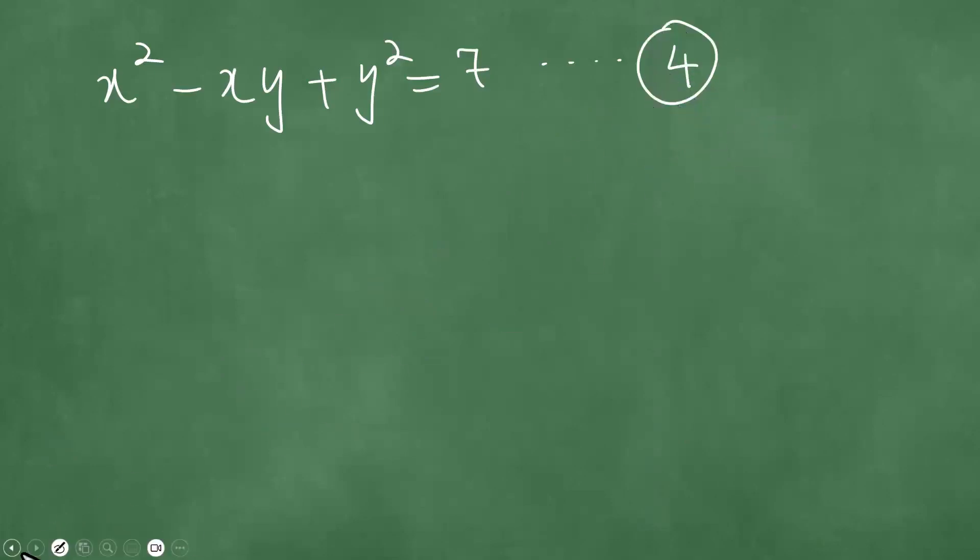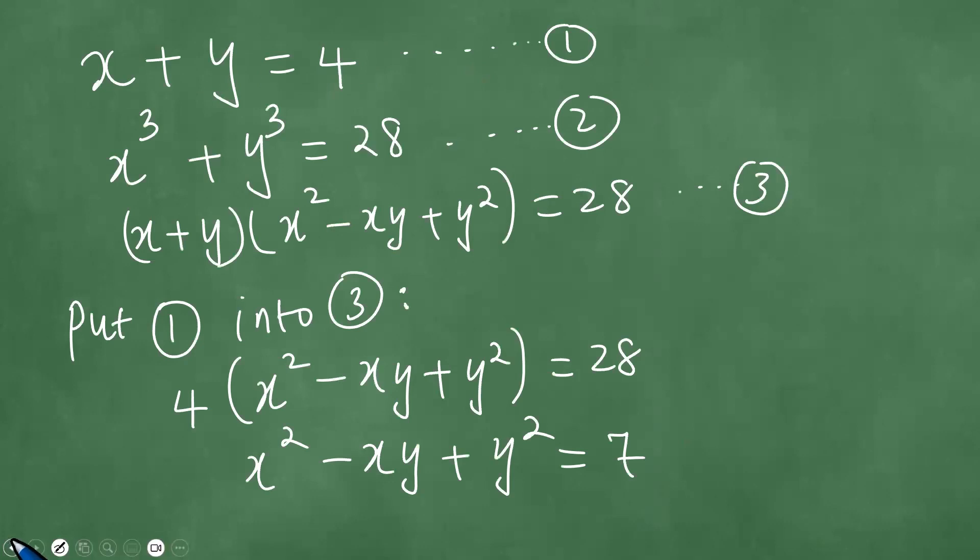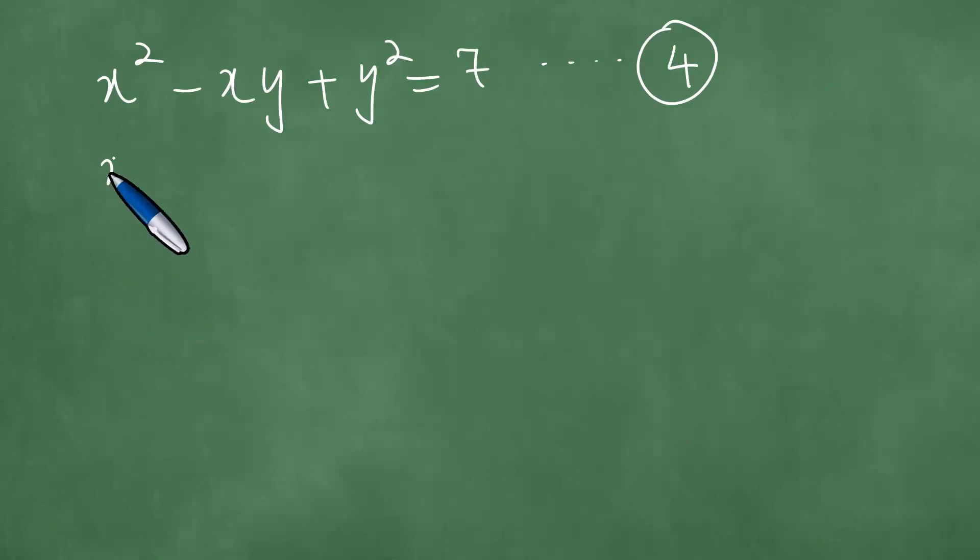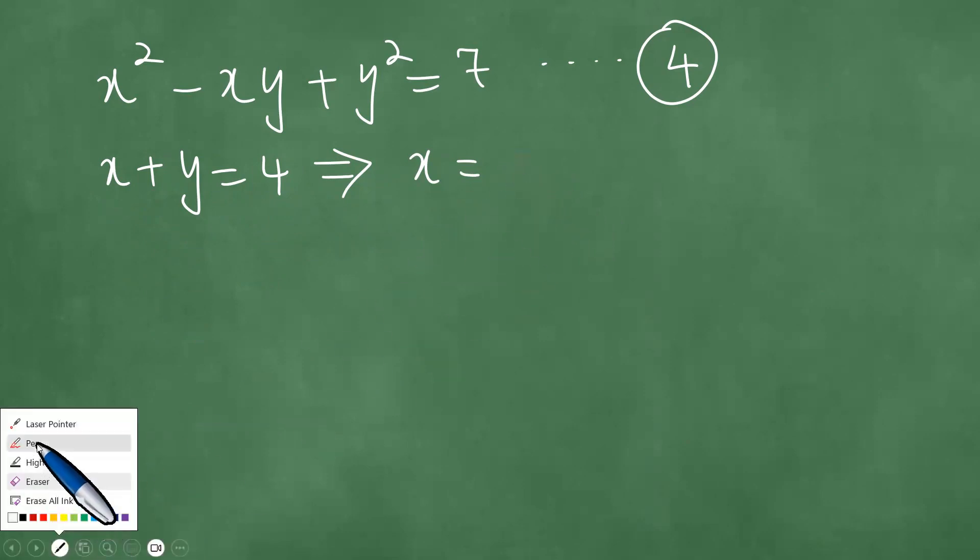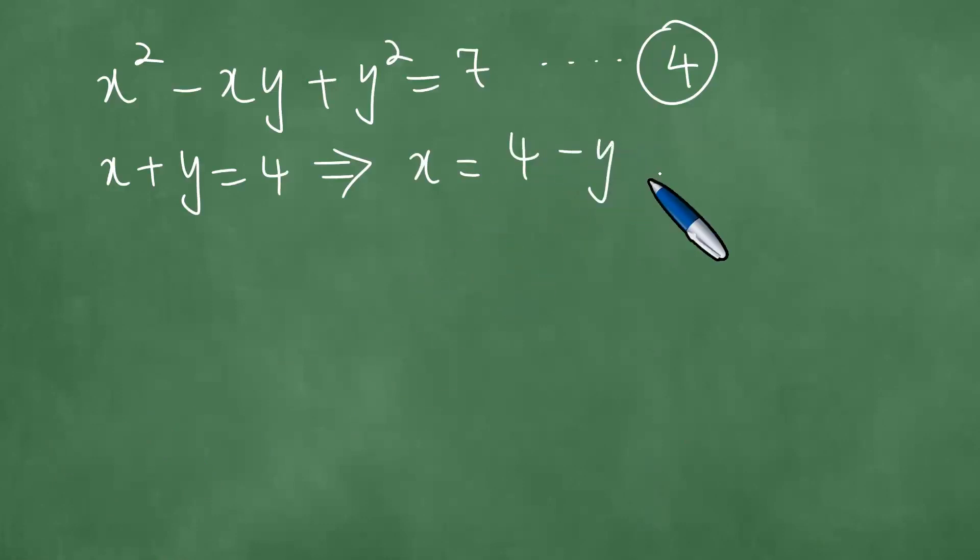After you've called it equation 4, what else do you get? So you have x plus y equals 4, and this means that x is equal to 4 minus y. Call it equation 5. And then from these, continue to say put 5 into 4.